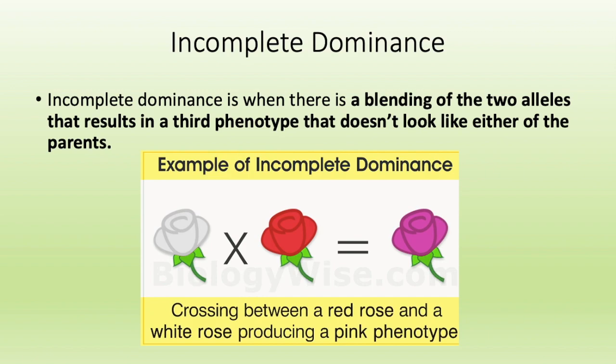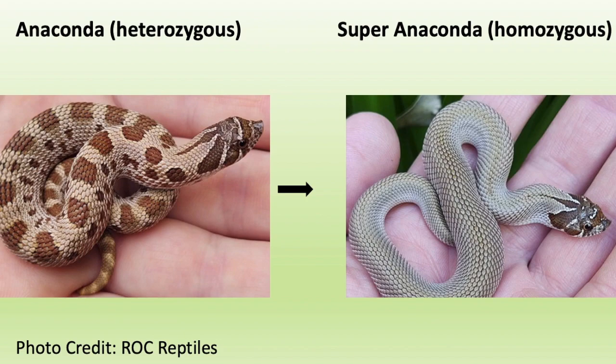In hognose snakes we have two incomplete dominant genes. The first is the anaconda gene, which causes a reduction in pattern. When a hognose has one copy of the anaconda gene — the heterozygous form — you get a pattern reduction compared to a normal hognose. The super form, where the snake carries two copies of the anaconda gene, one from mom and one from dad, gives you a complete pattern reduction outside of the head stem. This homozygous form is also called the super anaconda.